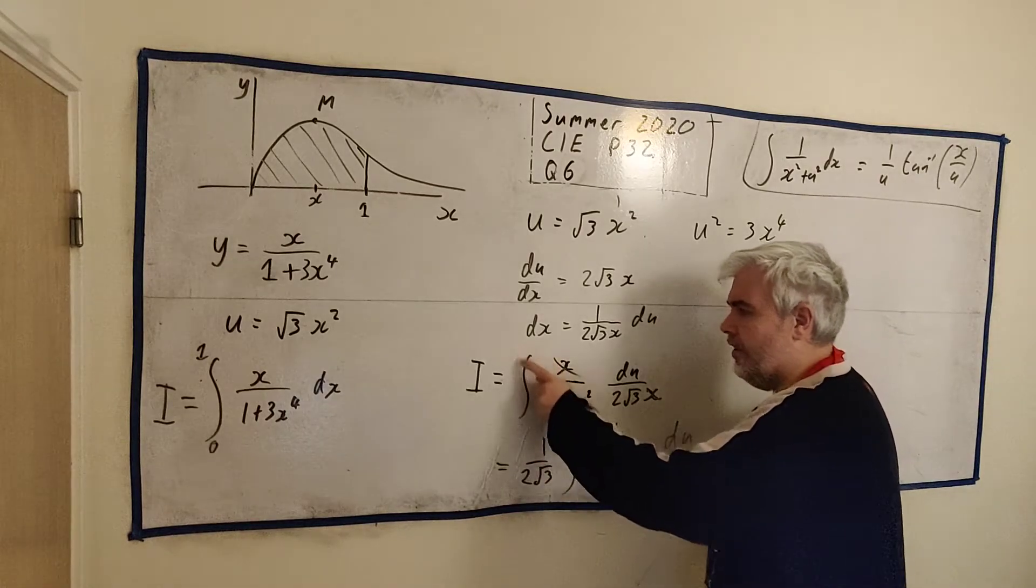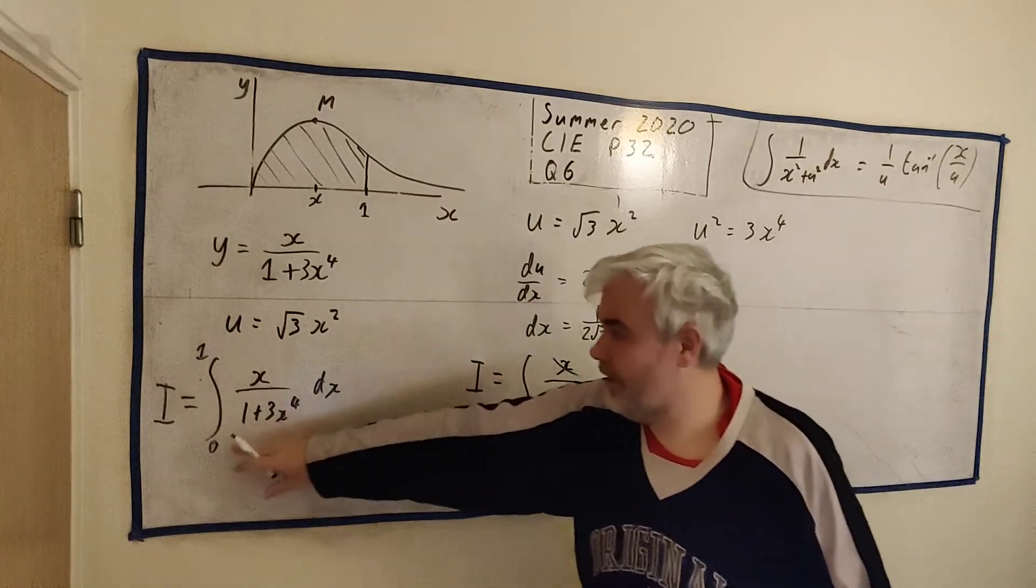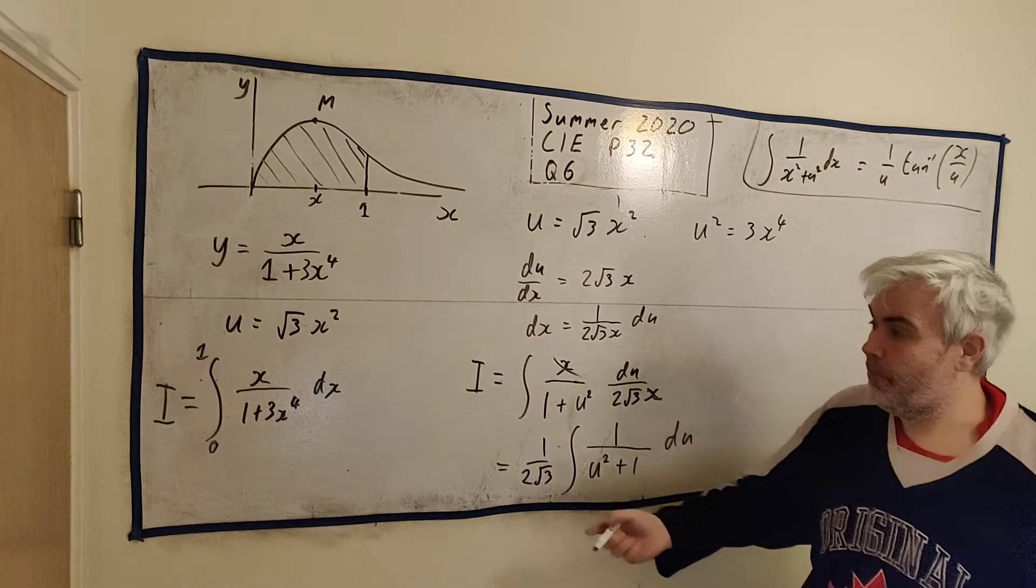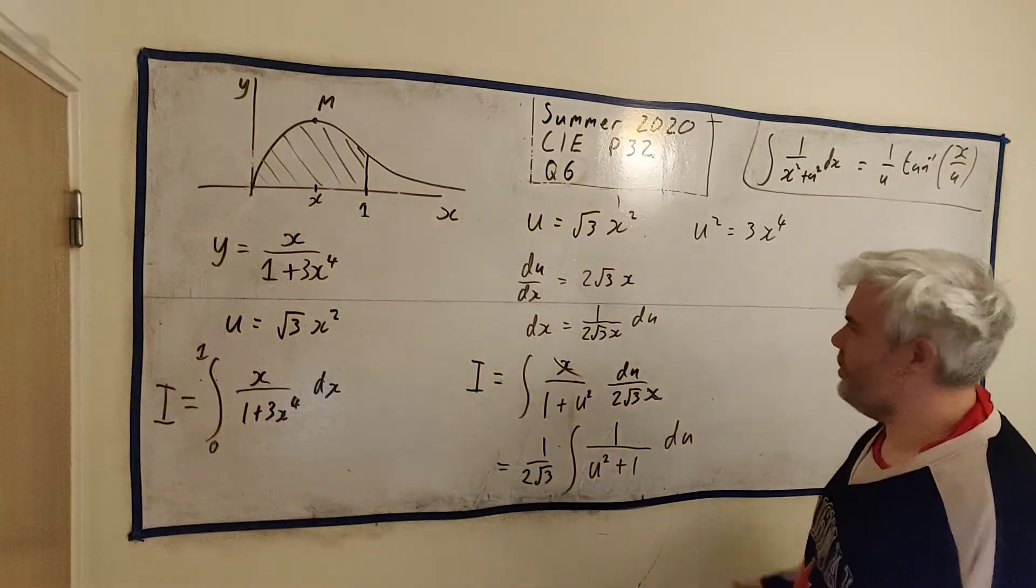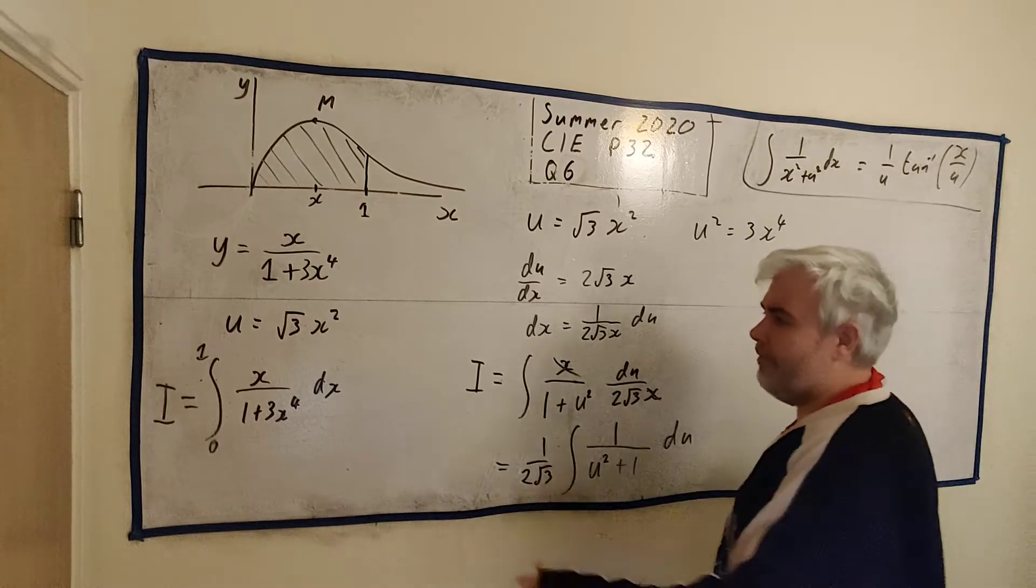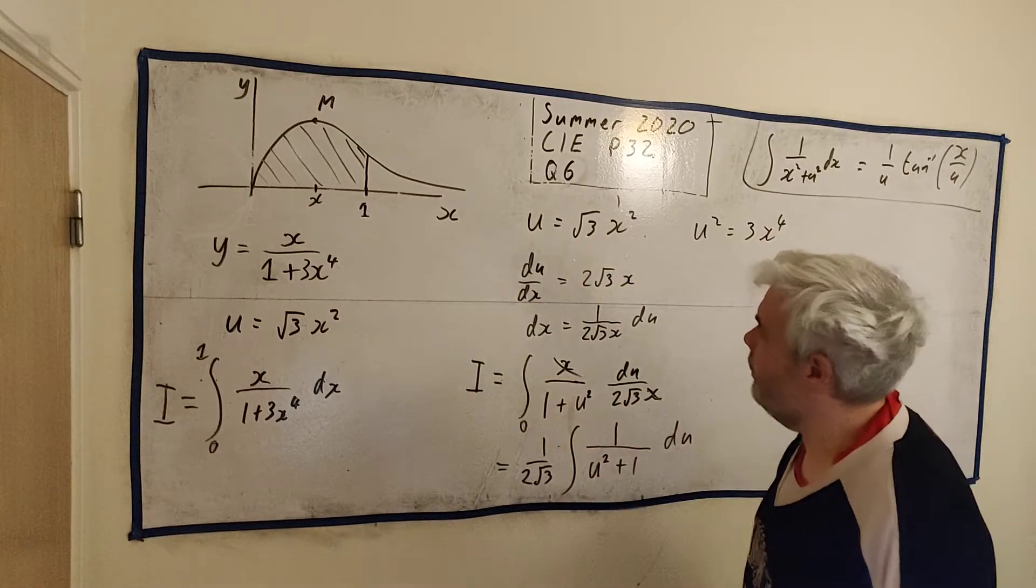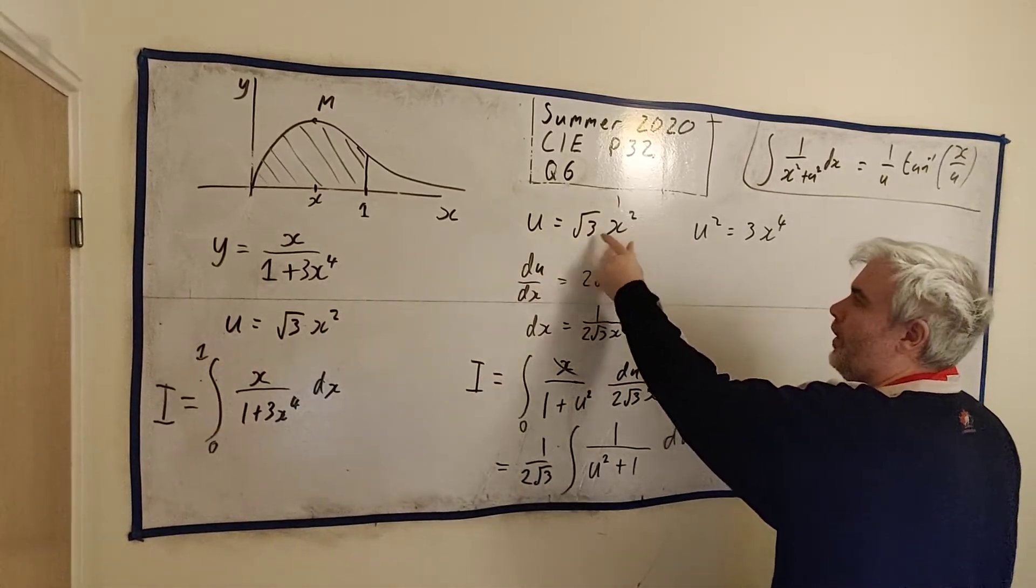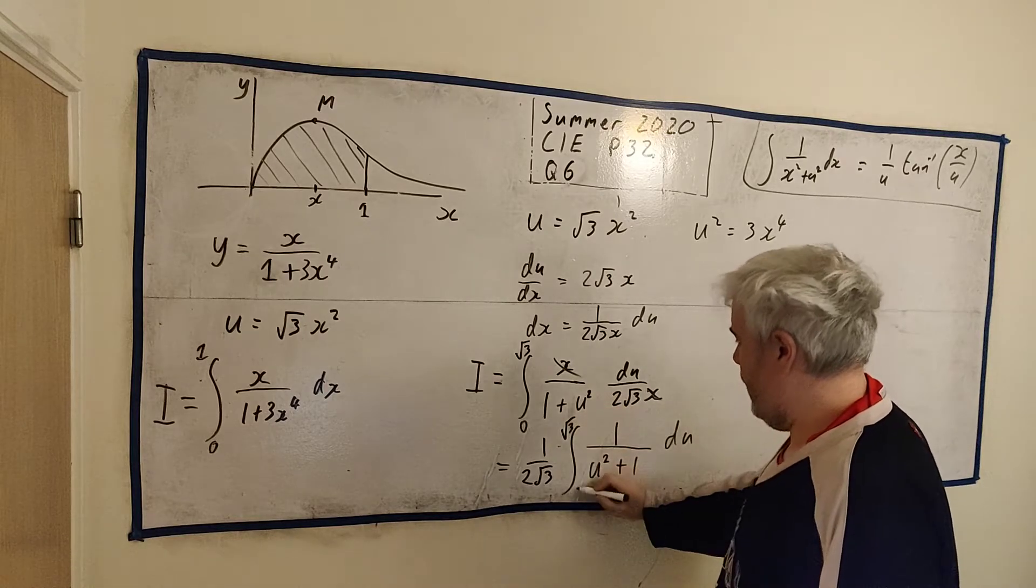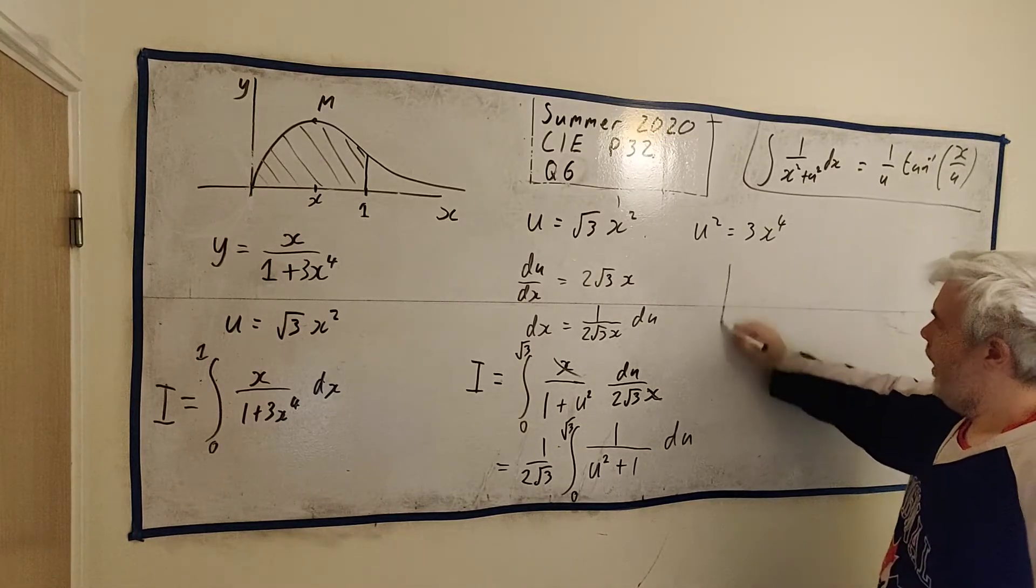I haven't written in any limits because I've changed it to u. These are going to be different limits than 0 and 1. Let me change them now. If x is 0, then u is 0. If x is 1, u is square root of 3. I'll go ahead and use these limits then, and that way we don't have to change back to x.